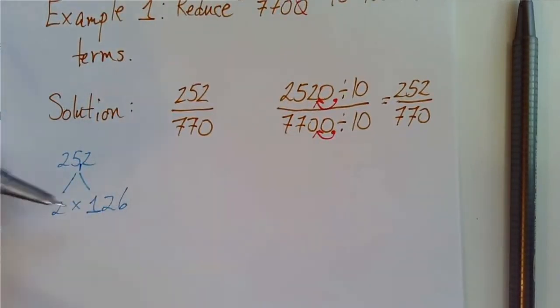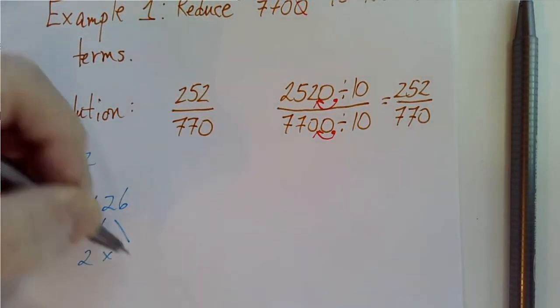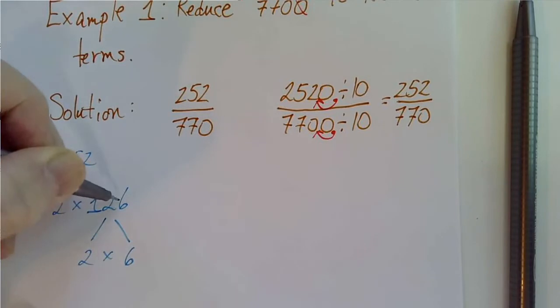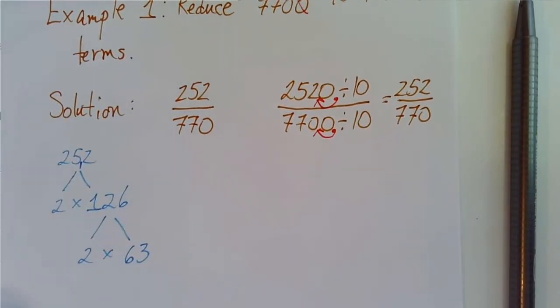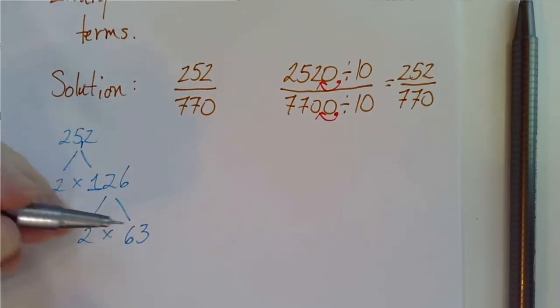Again, 6 is an even number. So 2 will go evenly into this number. 2 goes into 12 six times. 2 goes into 6 three times. Now, I see that 3 is not an even number. So 2 will no longer go into this. But let's check on 3.